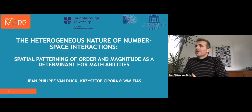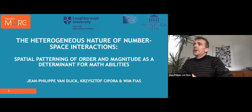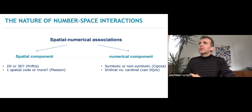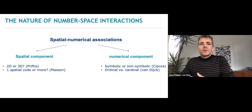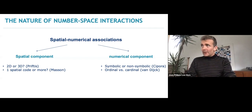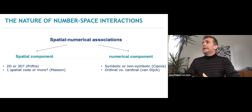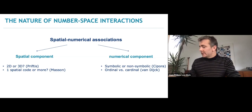I'm going to talk about the heterogeneous nature of number-space interactions, and more precisely about the way how spatial patterning — which we call here the more general principle of mapping numerical magnitude or order to space — can be used as a determinant for mathematical abilities. To frame the current talk: if we want to understand the nature of spatial numerical associations, we can study the spatial component, like in the presentations of Konstantinos and Nikola, or we can focus more on the numerical component. Christoph will talk about symbolic aspects of number processing, and in this talk I'm going to talk about the ordinal and cardinal aspects and how they relate to mathematical abilities.